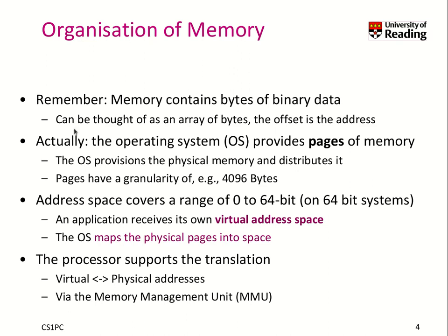This is logically how you think about it. But in fact, the operating system provides us with pages of memory. Where do these logical pages come from? They come from the physical memory — our DIMMs, for example, that we bought and stick into our PC. Your computer maybe has 8 or 16 gigabytes of main memory, and this is partitioned into memory pages. Typically at a granularity of 4 kilobytes of data, the operating system hands them over to the applications.